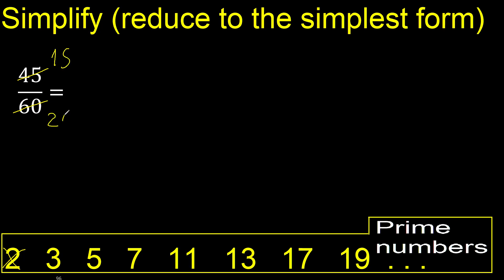20 cannot be divided by 3. Divided by 5: yes, both can be divided by 5. 15 divided by 5 is 3, and 20 divided by 5 is 4. Finish, because 3 and 4 cannot be divided by the same number.